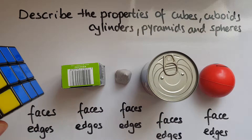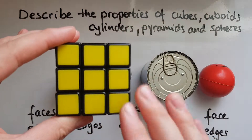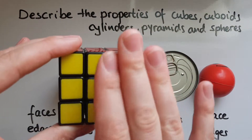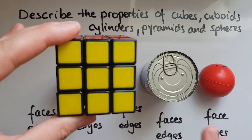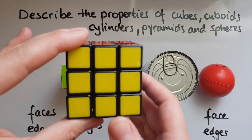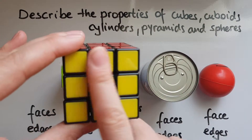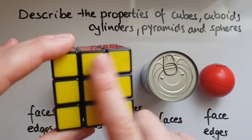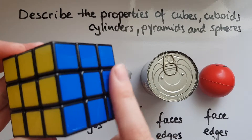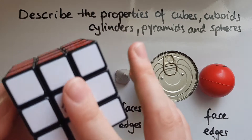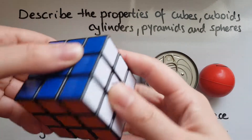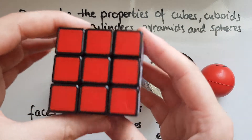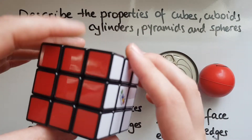Looking at a cube, the faces are the ones that we see when we turn the shape around. So this is one of the faces — they're normally flat. Counting them: one, two, three, four, five, six. So there are six faces in a cube.